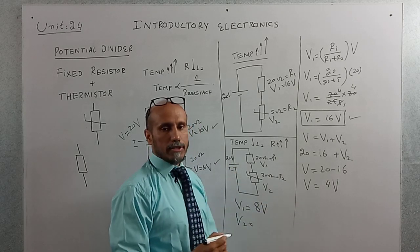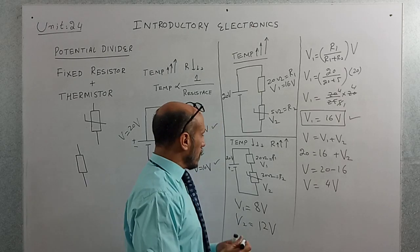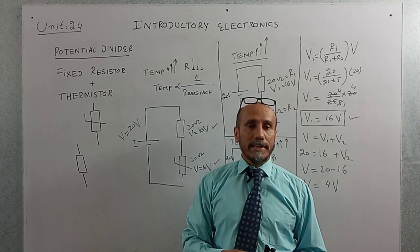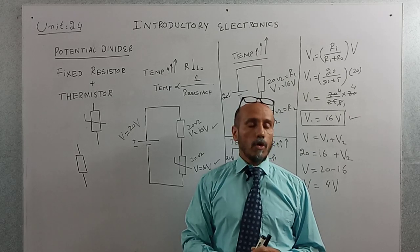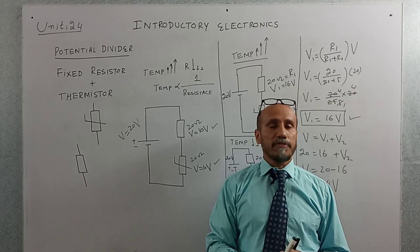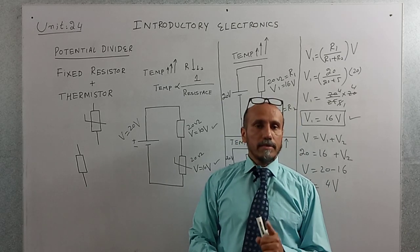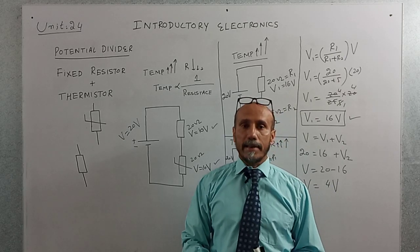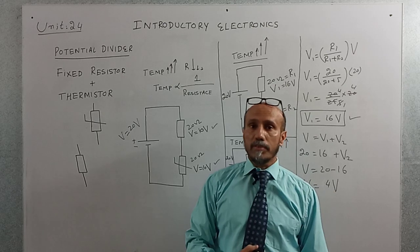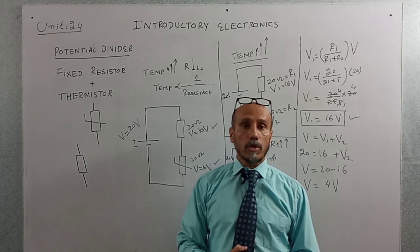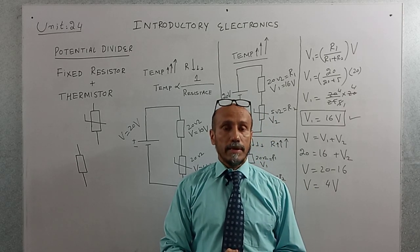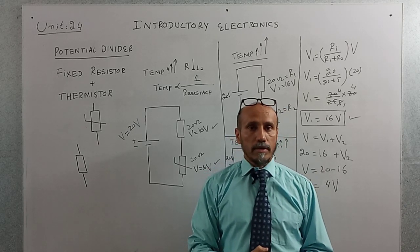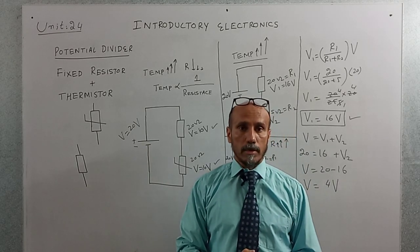Applying the formula, the voltage across R1 is 8 volts, and since the total voltage is 20 volts, the voltage across R2 is 20 − 8 = 12 volts. In this way, we can use a potential divider whose output voltage depends on temperature, by combining a fixed resistor and a thermistor.